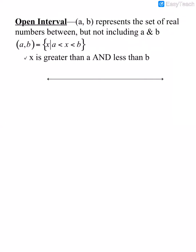The interval from A to B represents the set of real numbers between, but not including, A and B. So it's all the numbers in between those numbers, but those numbers at the ends are not included. This notation is called interval notation, and this other notation is called set builder notation.